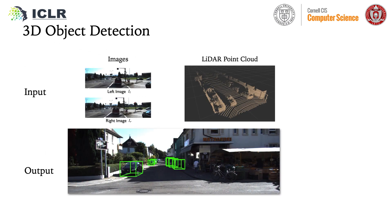In this paper, we focus on the 3D object detection problem. The model should predict the 3D locations of objects, for example, cars in an autonomous driving scenario, based on sensor data like LIDAR point clouds or images.